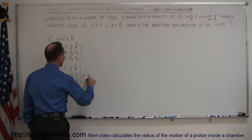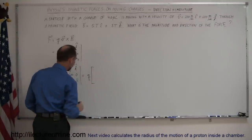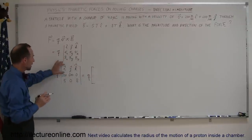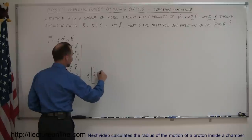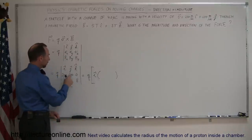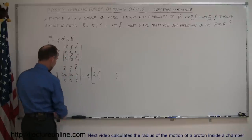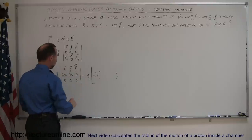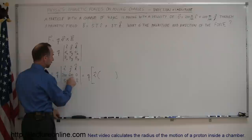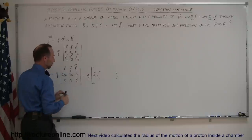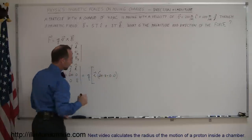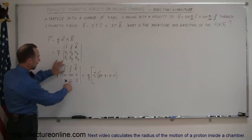This equals charge Q times the result of the matrix. For the I component, you hide that column and row, leaving four elements: 600 times 8 minus 0 times 0. So it's the I unit vector times the product of those two minus the product of those two.